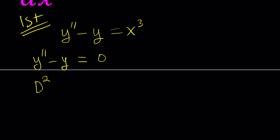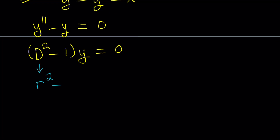We can write this with the differential operator and then find the characteristic equation. The second derivative is represented by D squared, and since y is not differentiated I put a one there, applying this to y to get zero. This is the same thing as y double prime minus y. From the differential operator we can go directly to the characteristic equation, written as r squared minus one set equal to zero. From here we find the roots, and once we find them we can write our solution as a linear combination, which is e to the power rx.